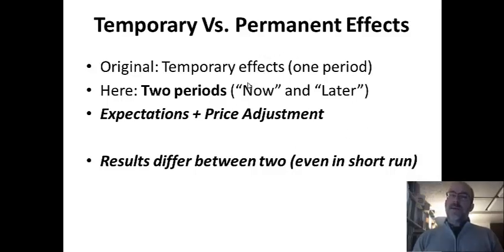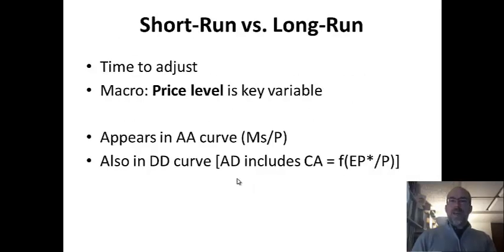The thing that happens with a second period is that prices adjust slowly, and this model is like a Keynesian model with sticky prices and slow price adjustment. Between now and later, prices are going to rise, and that will make some of the variables revert or some curves shift as a second shift. But the big thing is that results differ between the two models. Even in the short run, expectations are going to have an effect even before this second effect kicks in.